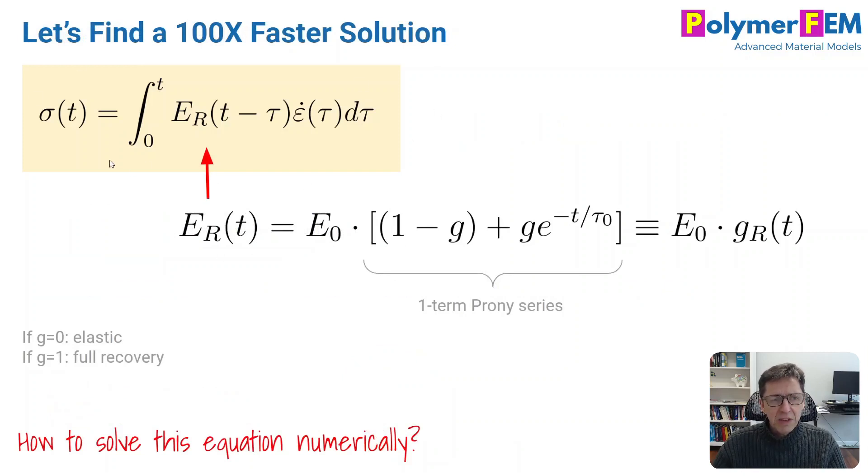Here's the equation again that we had from the previous page, and we need to specify some mathematical form for the relaxation modulus that I introduced in my previous video. In this case I'm going to write it in this form: E0 is the initial Young's modulus, G is the amount of relaxation, and then there's an exponential decay here. So G of R is a normalized relaxation modulus, and this quantity here is one Prony series term. I will talk about Prony series terms later on, but for now this is just what I want to use here for simplicity.